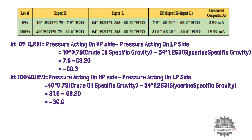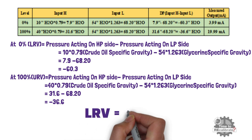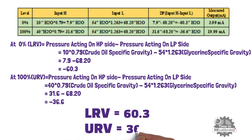The negative calibration range indicates that it is a closed tank level measurement with a wet impulse line. Set positive 60.3 as the lower range value in the transmitter and set positive 36.6 as the upper range value. In conclusion, whenever you see the lower range value is higher than the upper range value, it means it is a closed tank level measurement.